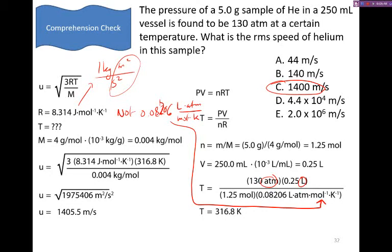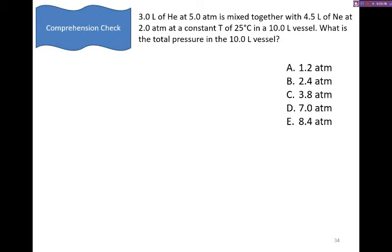Okay, let's move on to another problem. Again, pause the video now, read over and try this on your own before looking at the solution. Welcome back. So in this case, we're given three liters of helium mixed with four and a half liters of neon. And each of those are at different pressures, but a constant temperature. We want to know what's the total pressure in the final vessel.